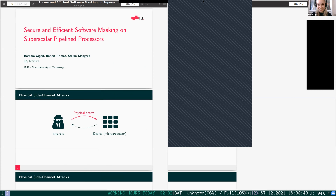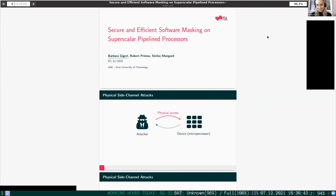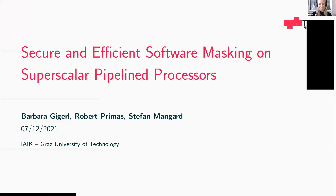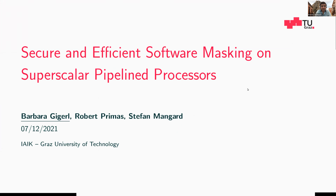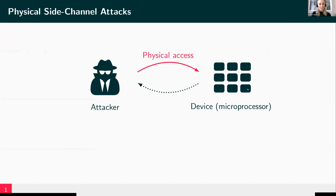Hello, thank you for the introduction. You can see my presentation, right? Yes, we do. So welcome to my presentation. In the setting of physical side channel attacks, we have a certain cryptographic device and an attacker who wants to attack the device, who has physical access to the device, and can mount things like a power analysis attack.